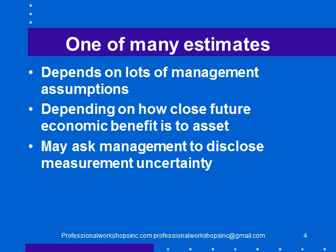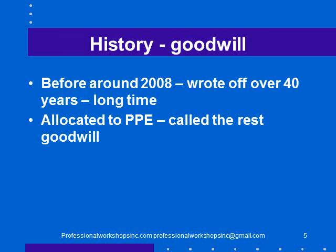Goodwill impairment and impairment of intangibles is one of many estimates in the financial statements, and it depends on lots of management assumptions. Depending on how close the estimate of future economic benefit is to the asset value, there are different decisions to make. If there's lots of future economic benefit and it's clear there's no need for impairment, we don't need to worry. But when it starts to get close and there's sensitivity to the assumptions, it's a good idea for the auditor to ask management to disclose that measurement uncertainty, the assumptions used, and the fact that changing an assumption from 3% to 4% could cause the asset to be impaired.